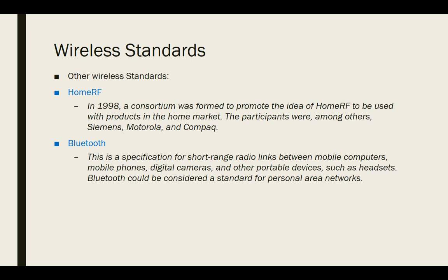Besides these wireless standards, two additional standards were proposed in 1998: Home RF and Bluetooth. A consortium including Siemens, Motorola, and Compaq was formed to promote Home RF for the home market. Bluetooth is a specification for short-range radio links between mobile computers, mobile phones, digital cameras, and other portable devices such as headsets. Bluetooth can be considered a standard for personal area networks.